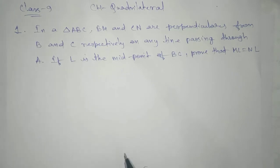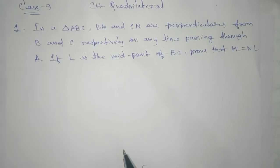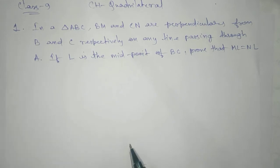If L is the midpoint of BC, prove that ML equals NL. Here your diagram is compulsory, and if you know how to draw the diagram then 60% work completed.